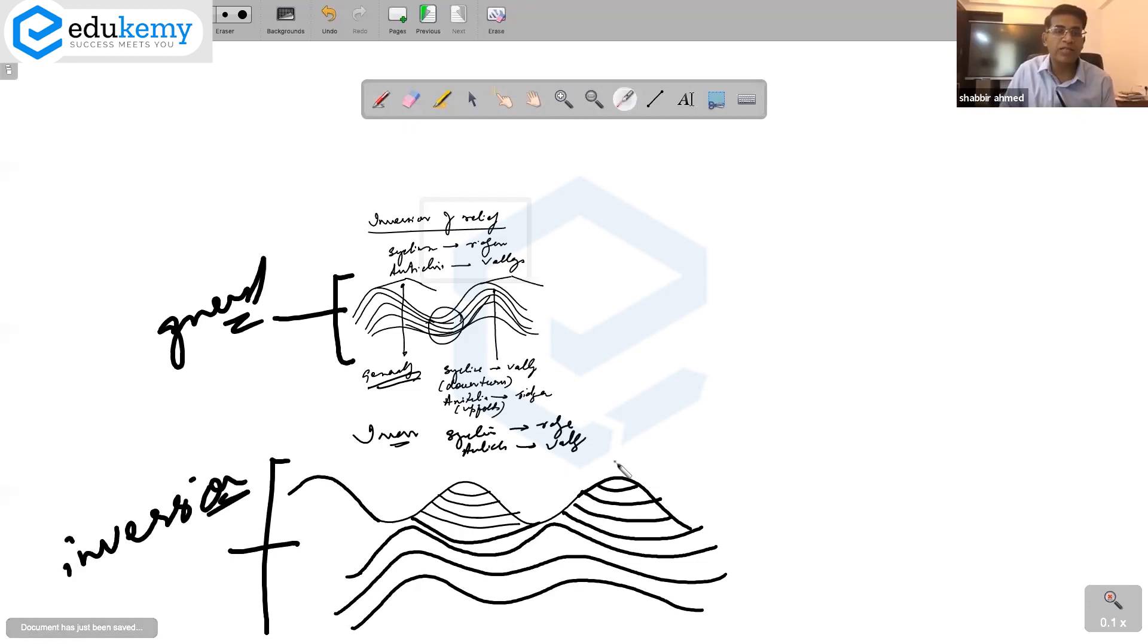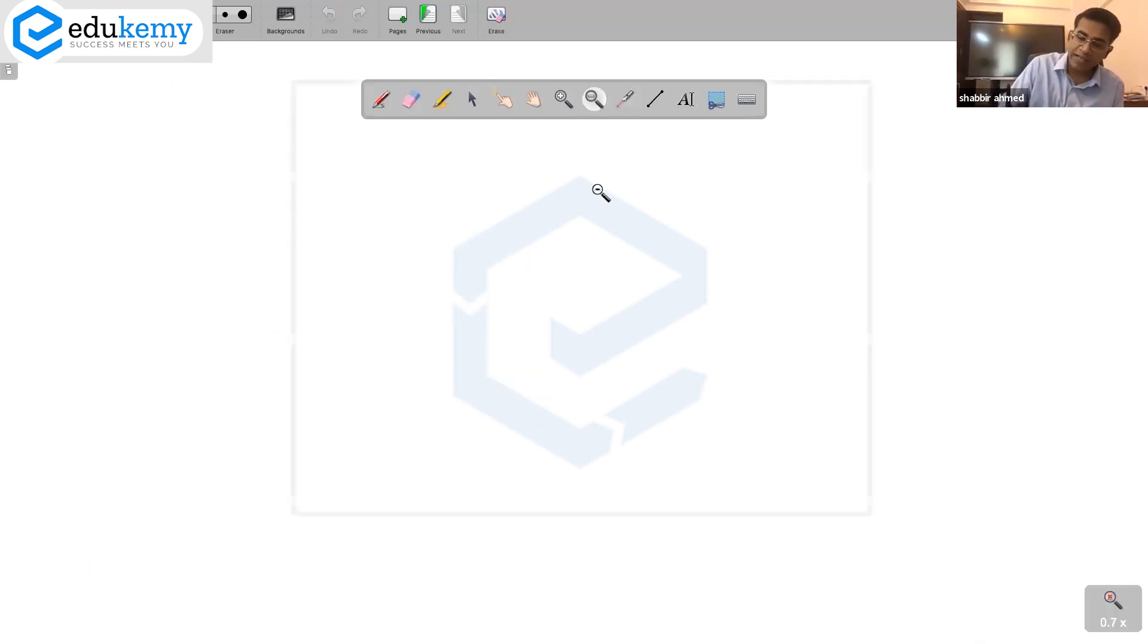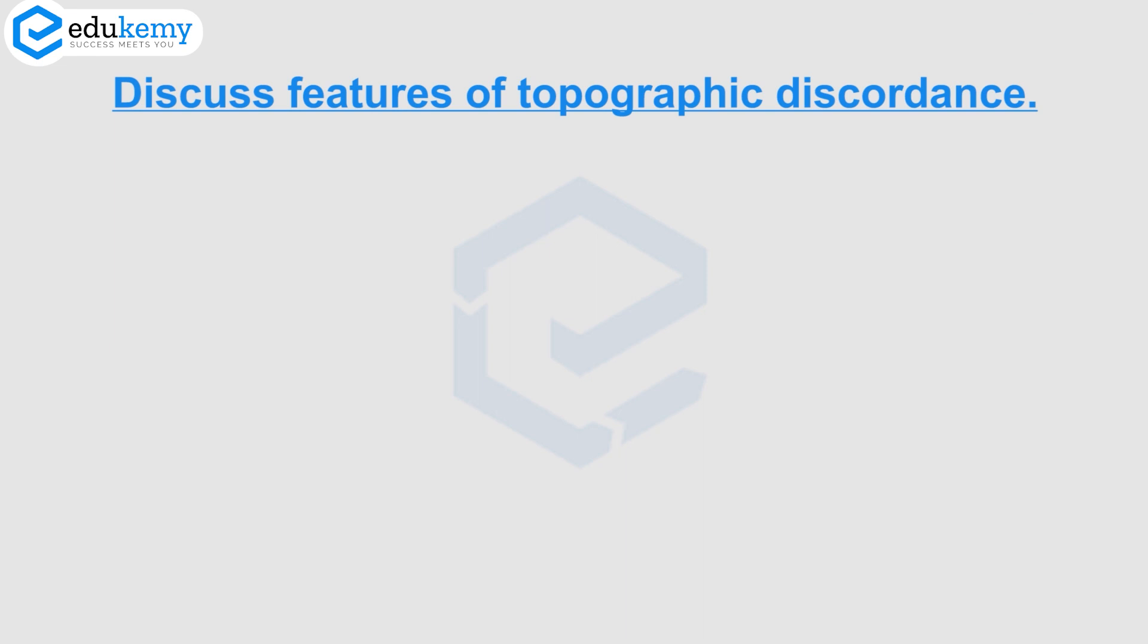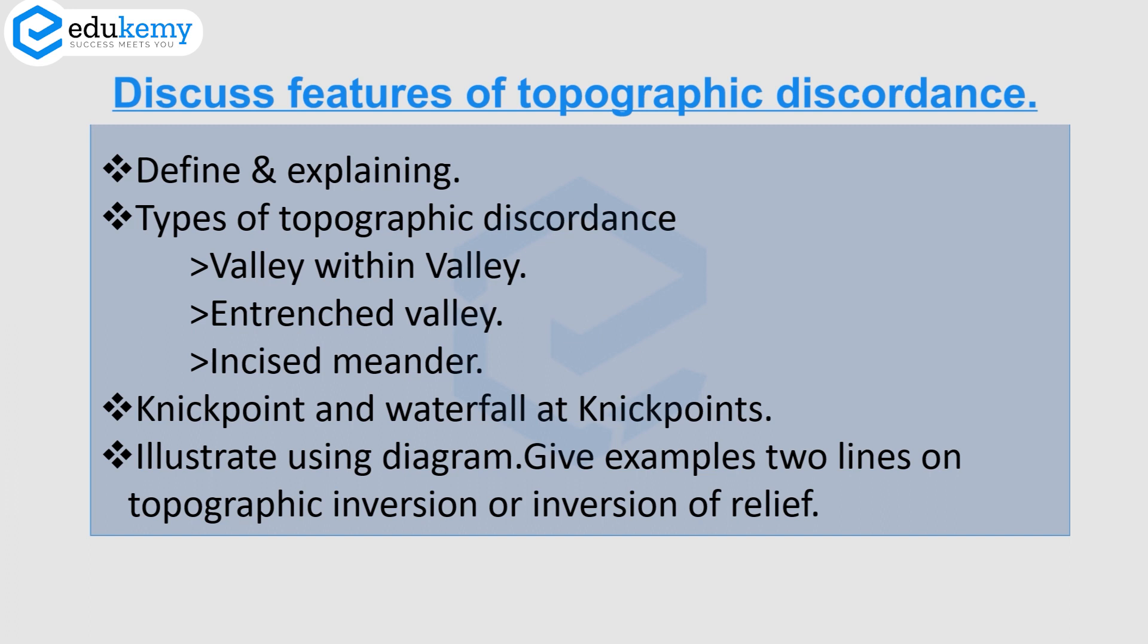So, it is not same as discordance, but when you organize your answer. Say, this is a question on, discuss features of topographic discordance. You will start by defining and explaining. Then you give what are the types, valley within valley, entrenched valleys, incised meanders, and nick points.